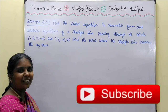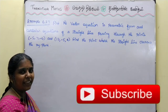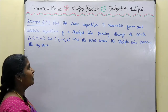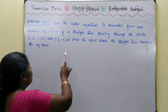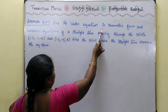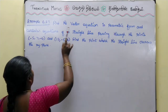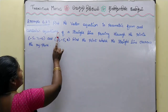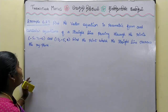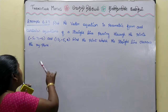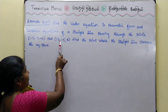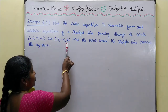Welcome students. Now we are going to talk about example 6.27. Find the vector equation in parametric form and Cartesian equation of a straight line passing through the points minus 5, 7, minus 4 and 13, minus 5, 2.